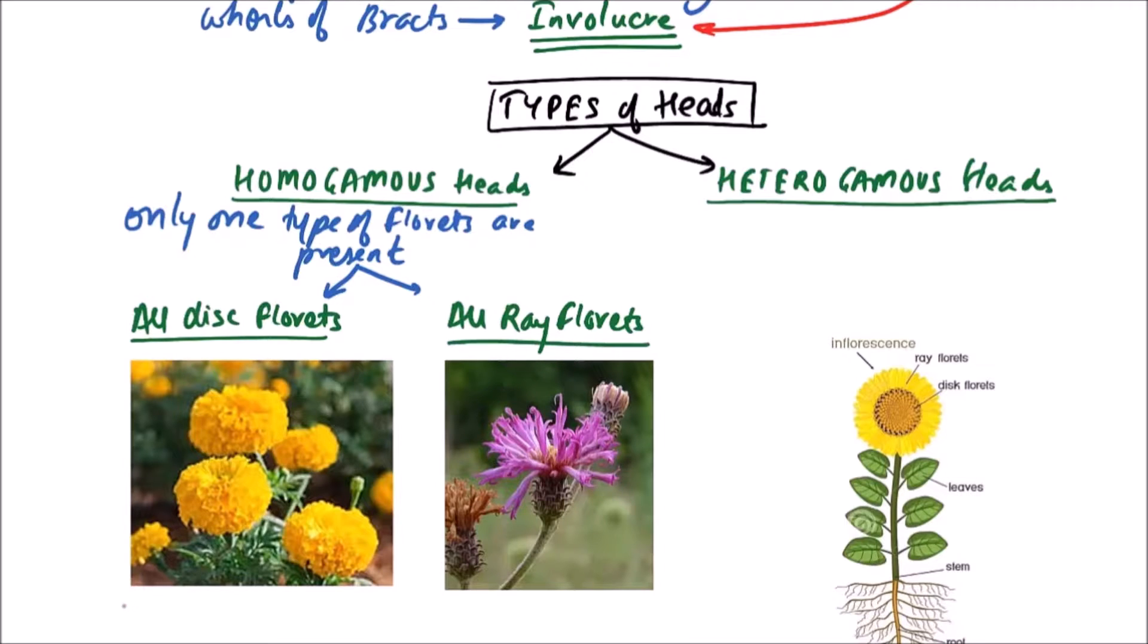The examples of all disc florets types include Vernonia, while the all ray florets type include Tagetes and Zinnia.